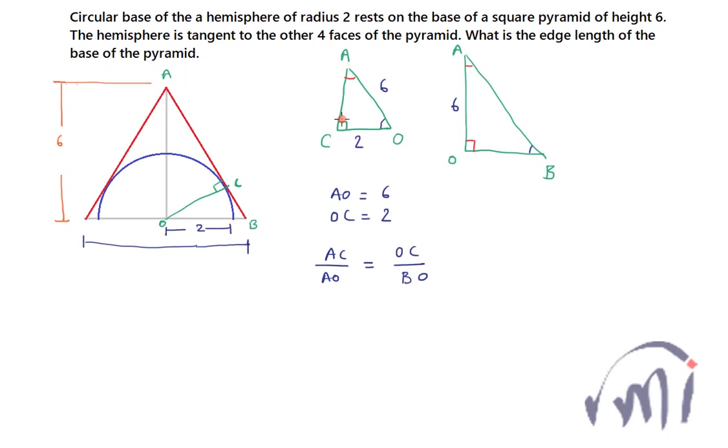So in triangle ACO, AC squared will be equal to 6 squared minus 2 squared. This is from the Pythagorean theorem, so this will be equal to 6×6 are 36 minus 2×2s are 4.